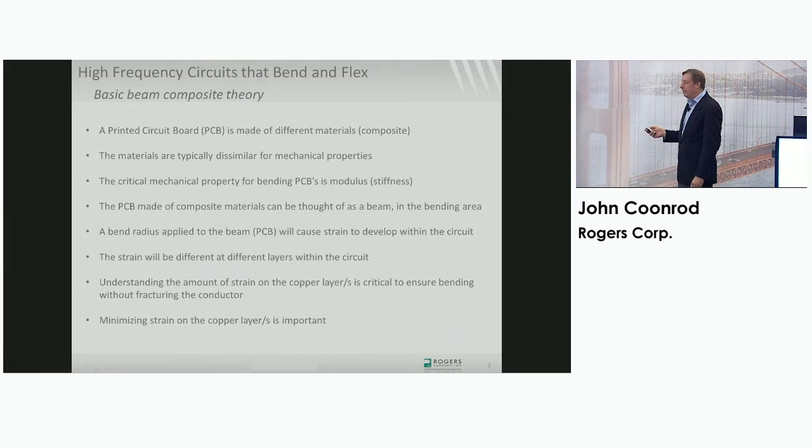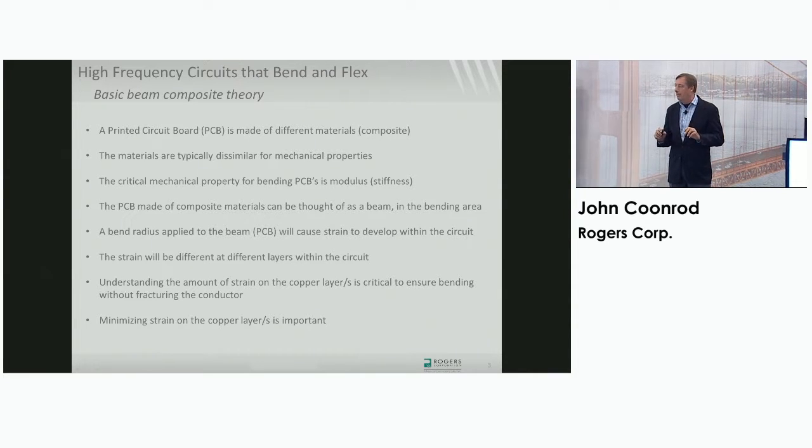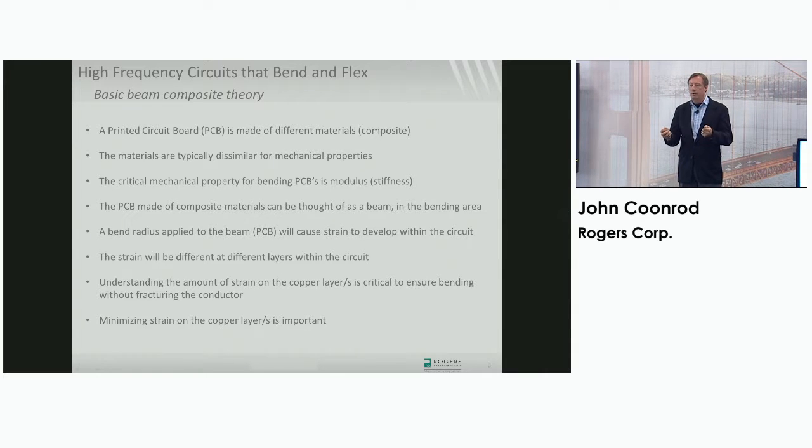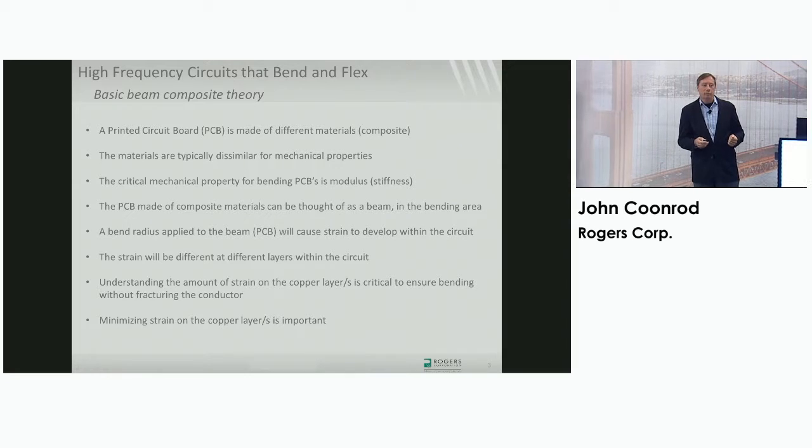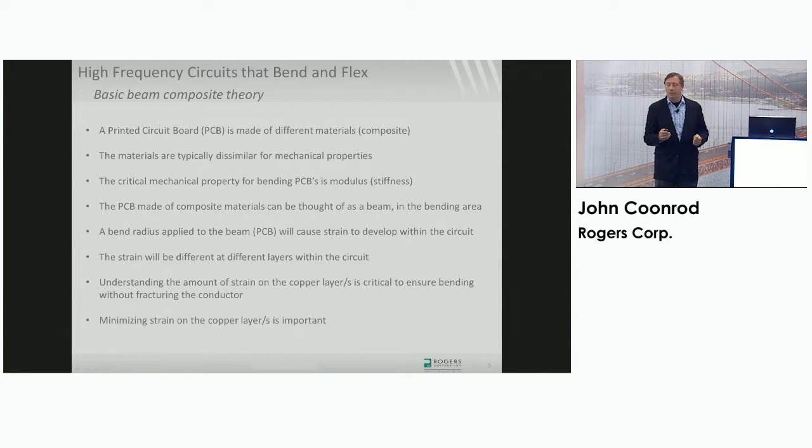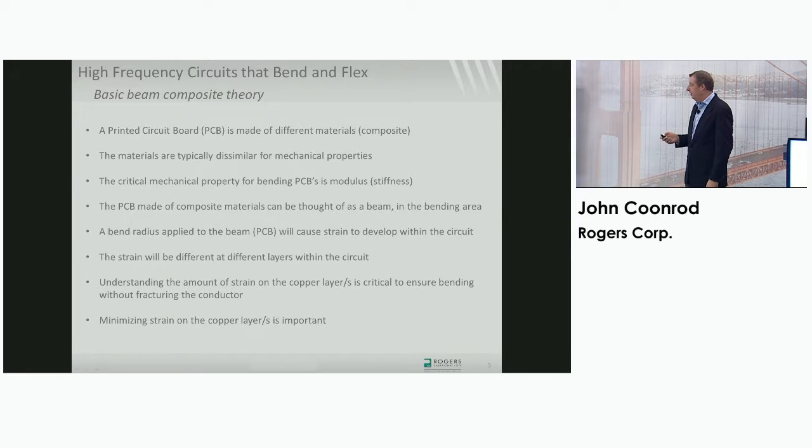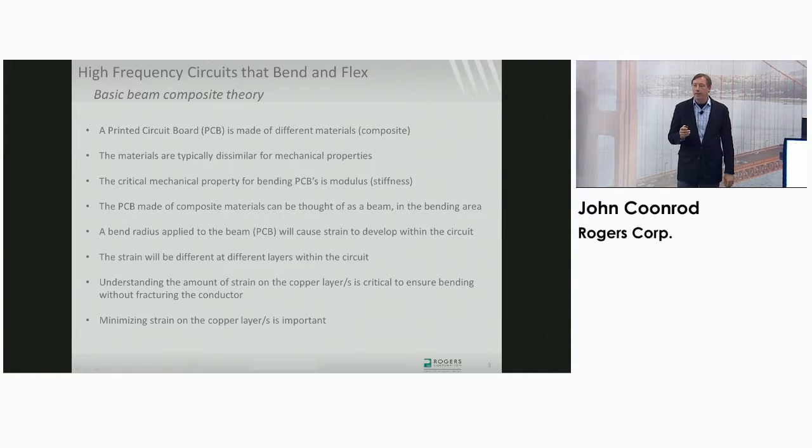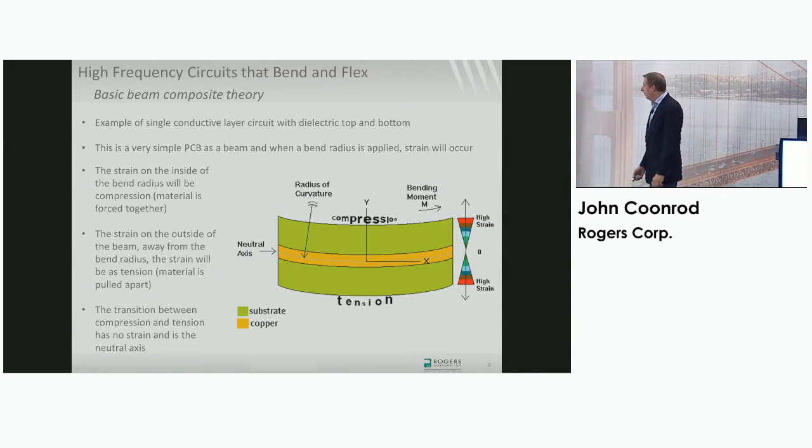The printed circuit board has all these different mechanical properties on the different layers as you bend this and apply a bend radius. When you apply the bend radius, you're actually making the strain inside the circuit increase. That strain is going to be different on different layers within the circuit. Understanding the strain within the circuit, understanding the bend radius and what's that doing, that has a large impact on being able to bend and flex a circuit without cracking conductors, which is obviously the goal.